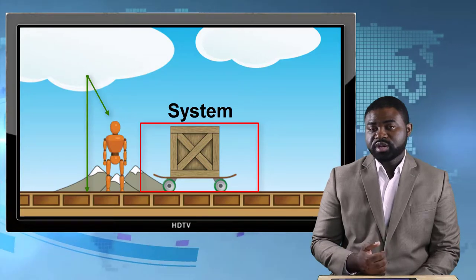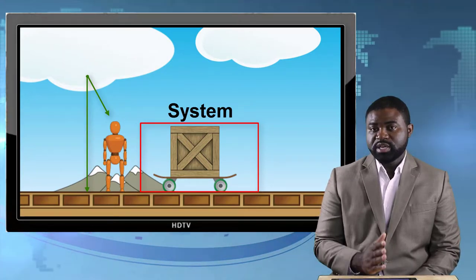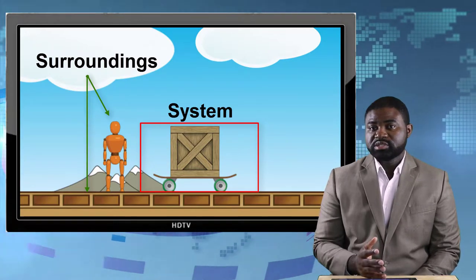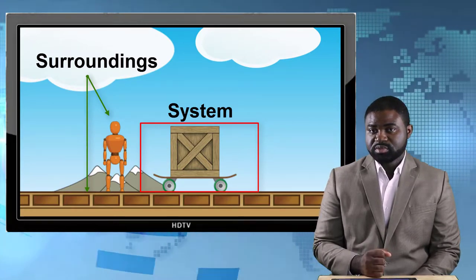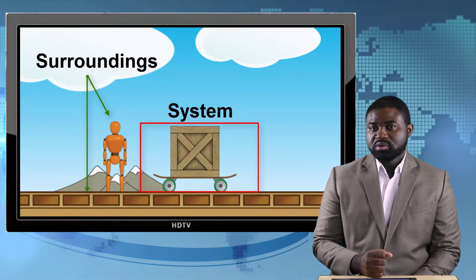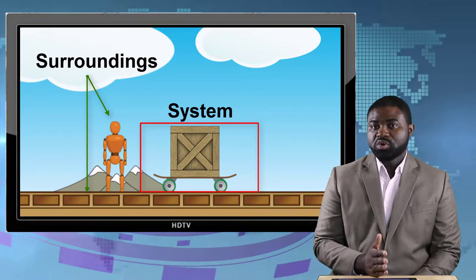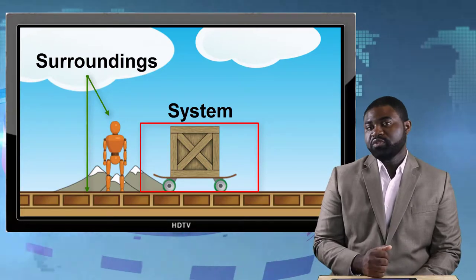Once we specify what our system is, then anything outside of the system constitutes what we call the surroundings or the environment. Let me give you an example.